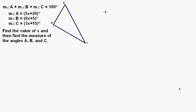We are given that the measures of angle A, B, and C add up to 180 degrees. Those are the sum of the interior angles of a triangle.